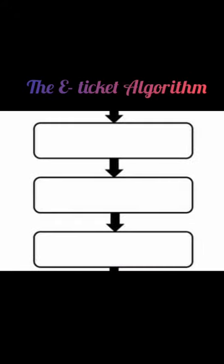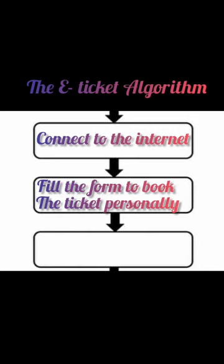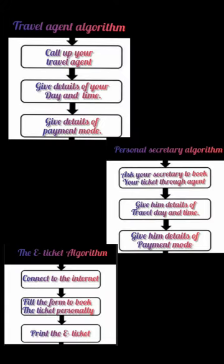Third, the e-ticket algorithm: you connect to the internet, fill the form to book the ticket personally, and print the e-ticket. All three of these algorithms accomplish exactly the same goal, but each algorithm does it in a completely different way. So, the steps to solve a problem is called the algorithm.